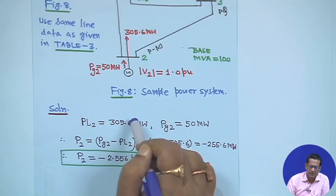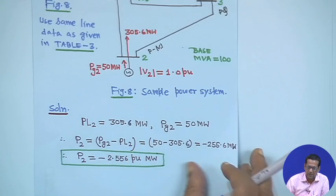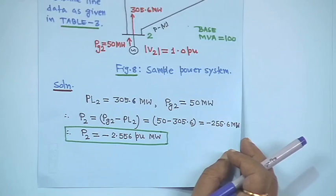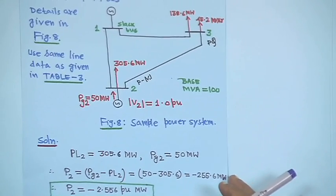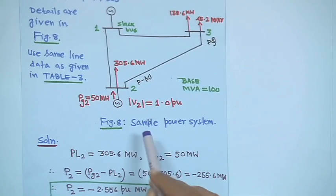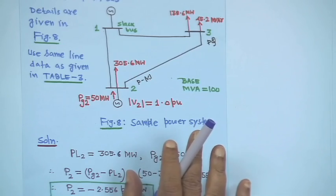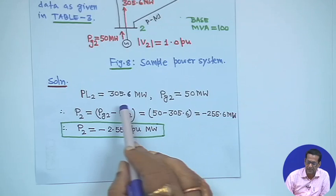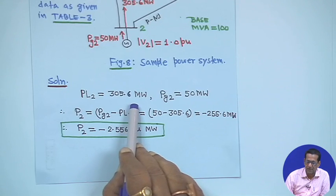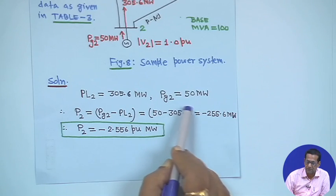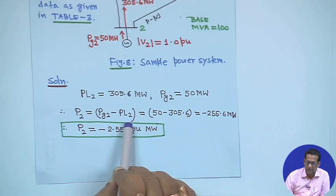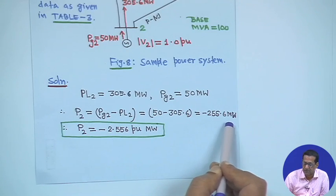We will show only a couple of iterations. No Q limits will be considered here, just to show how things work. P_L2 is 305.6 megawatt and P_G2 is 50 megawatt. Therefore, P₂ is equal to P_G2 minus P_L2, which is minus 255.6 megawatt, giving minus 2.556 per unit.